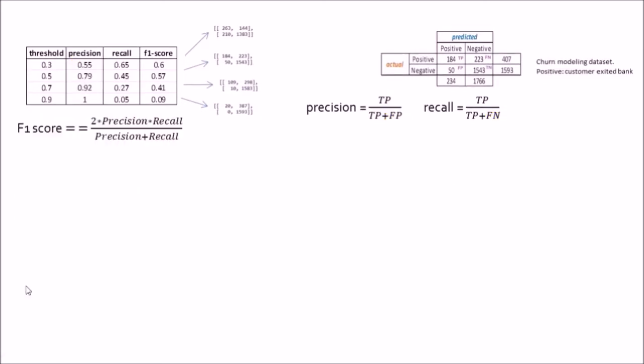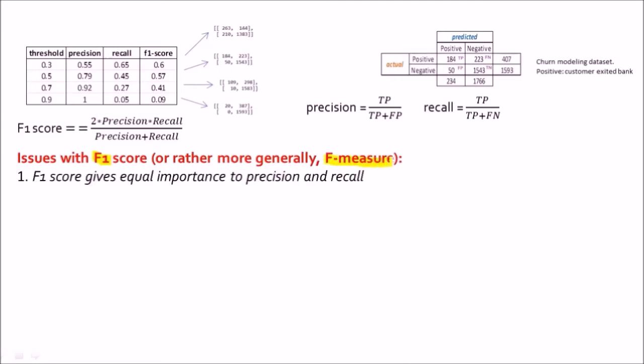Now there are a few issues with the implementation of F score or F1 score. Now this F1 score is just one of the family members of this bigger F measure family. Now first issue is that the F1 score gives equal importance to precision and recall. If we look at the formula, we notice that it is giving equal importance to both precision and recall which is a source of some criticism because in different real life scenarios the cost of false positives and false negatives are different and we cannot equate false positives to be equal to false negatives.